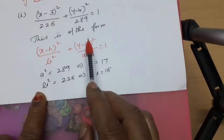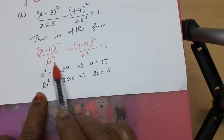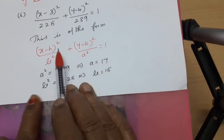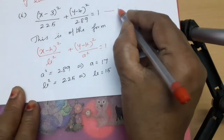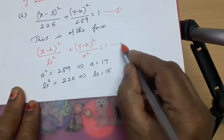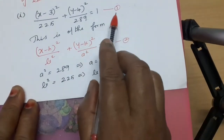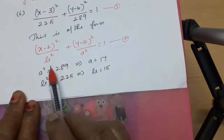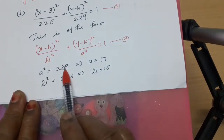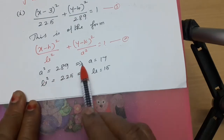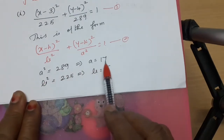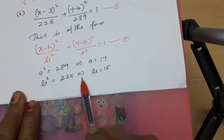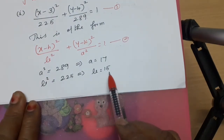This is of the form: x minus h whole square by b square plus y minus k whole square by a square equal to 1. Comparing equations, a squared equals 289, so a equals 17. b squared equals 225, so b equals 15.